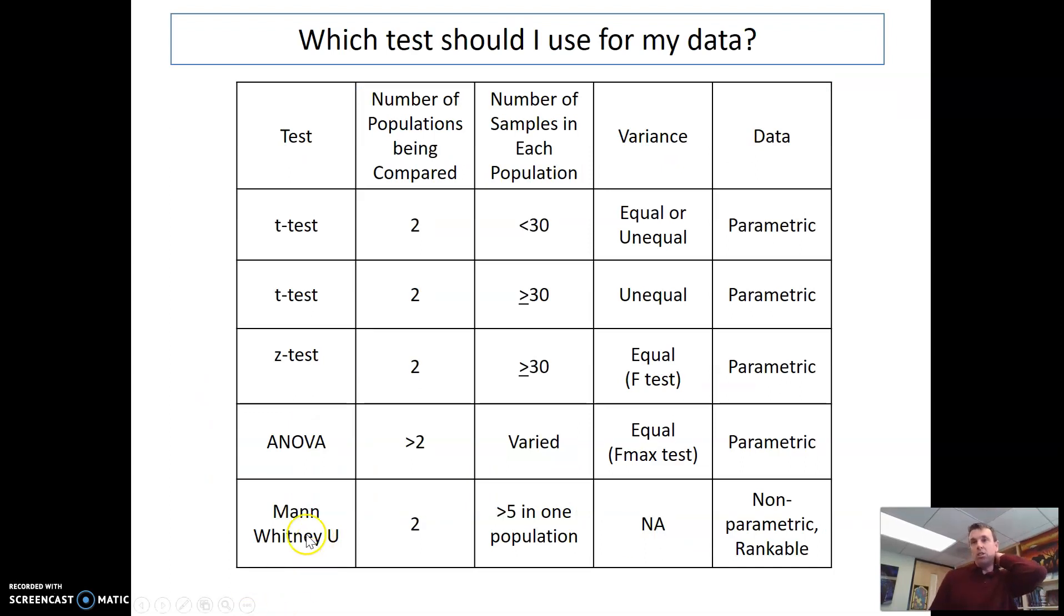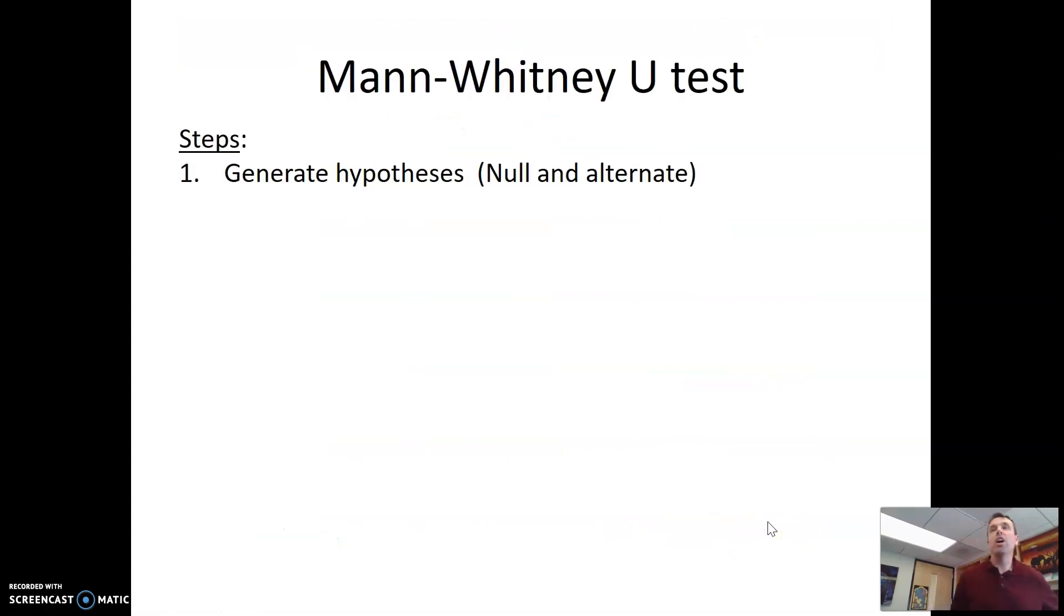So we can now add the Mann-Whitney U test to our list of tests that we should know about when you use the data. So Mann-Whitney U, again, just real quick, you're comparing two groups. You have at least five in one of the populations. We don't need to worry about the variance. And this is for non-parametric rankable data. So how do we do this?